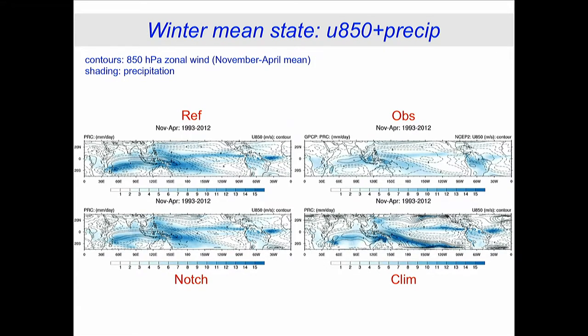Here's the validation. This is the winter state of the simulation: shading is precipitation and contours are low-level wind. The observations are shown alongside the reference run — the wind is the right sign, well placed, a little bit strong; rainfall is a little strong but well positioned. The notch run is very similar. The climatology run is rather poor because it's missing crucial synoptic timescale transient momentum fluxes, which screws up the climatology in the tropics, giving a poor simulation.